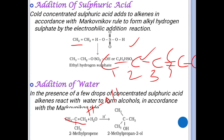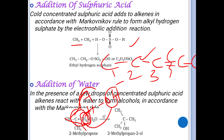In the addition of water, H⁺ is the positive part and OH⁻ is the negative part. According to Markovnikov's rule, the positive part (hydrogen) goes to the double-bonded carbon with more hydrogen atoms, and OH goes to the other carbon. For example, checking the two double-bonded carbons, the one with more hydrogens receives H⁺, and OH attaches to the carbon bearing more substituents, giving the alcohol product.